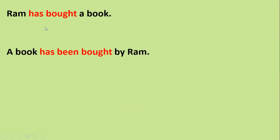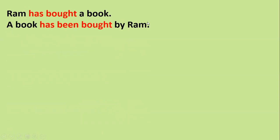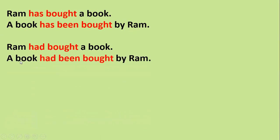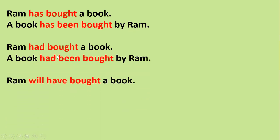Next: 'Ram has bought a book' — present perfect tense. The formula gives: 'A book has been bought by Ram.' We use 'has' because 'a book' is singular. If it is plural 'books', then: 'Books have been bought by Ram.' For past perfect — 'Ram had bought a book' — the answer is: 'A book had been bought by Ram.' For past perfect you always use 'had been bought'.